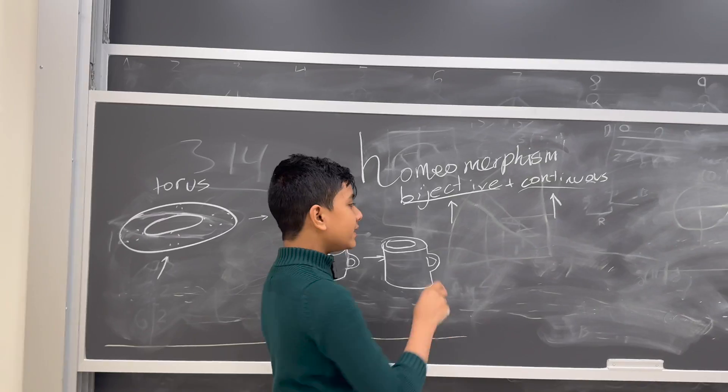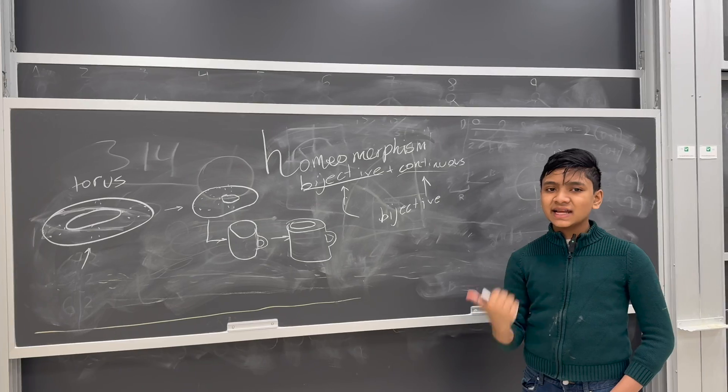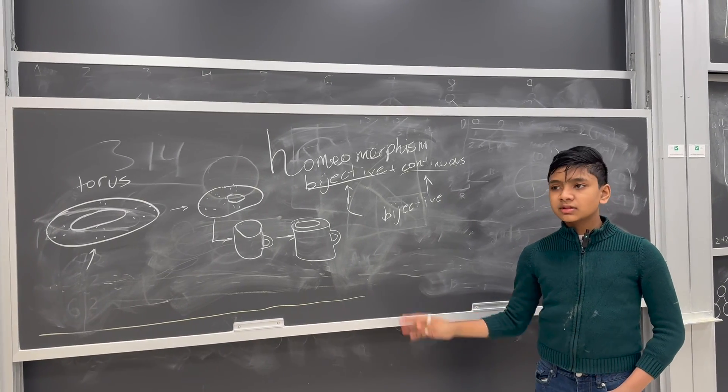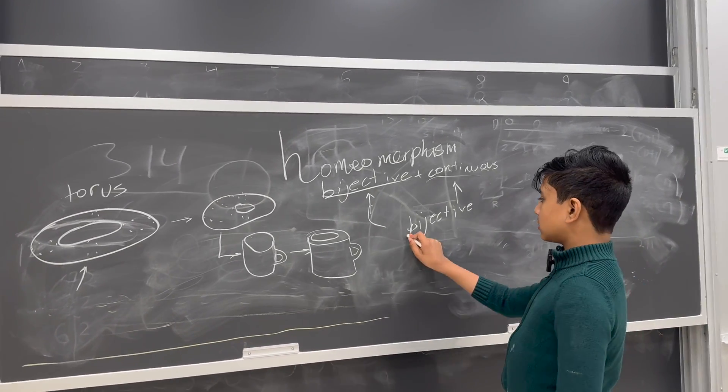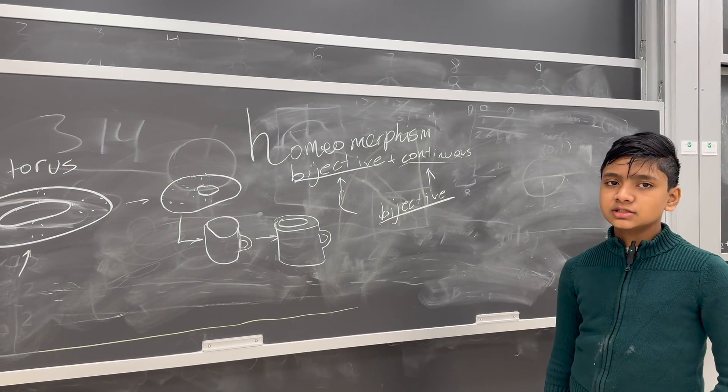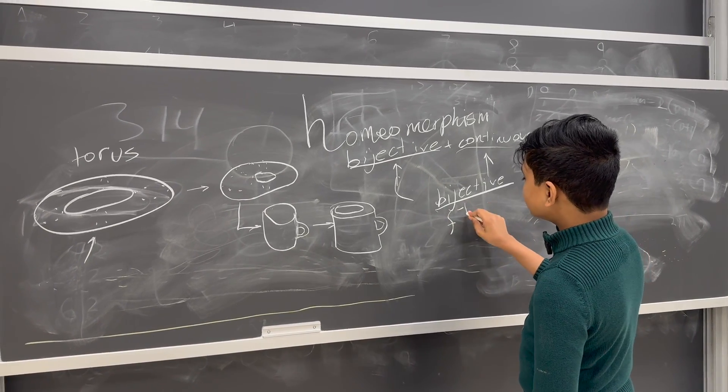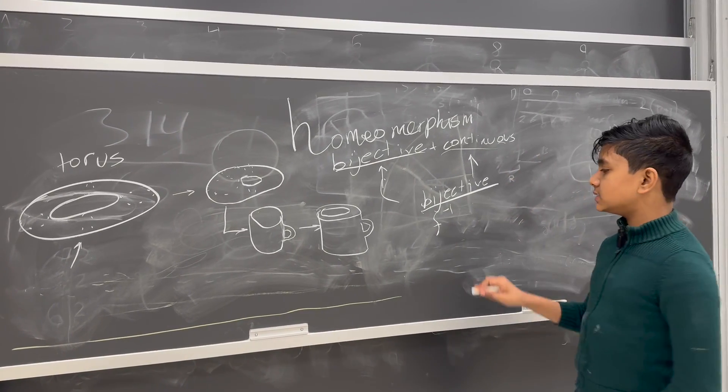Well, to be bijective, you have to be a combo of both surjective and injective. But those things are hard to explain. Well, not hard to explain, but I'm teaching this for a general audience. So this essentially means that an inverse of the function exists.